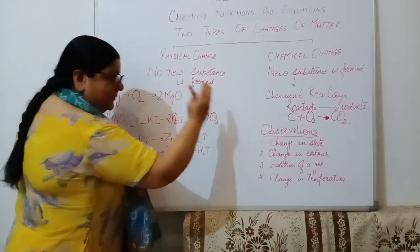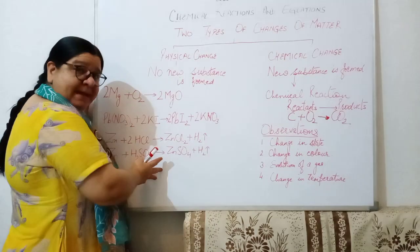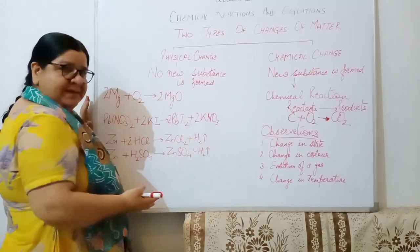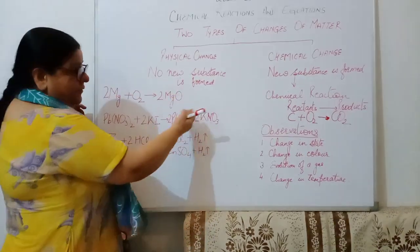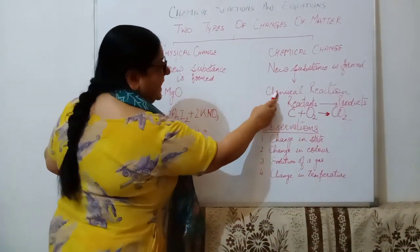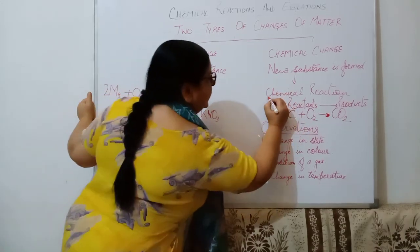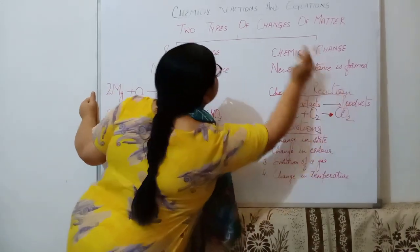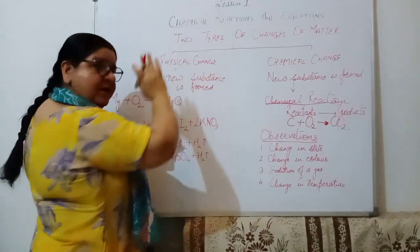So, for these four observations, I have given you four examples. There can be more examples also in this. So, if we observe these four changes, we come to know that a chemical reaction has taken place. This is what we are reading about chemical reactions.